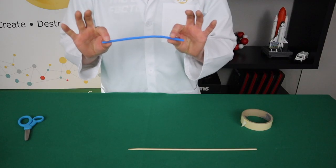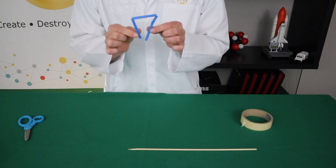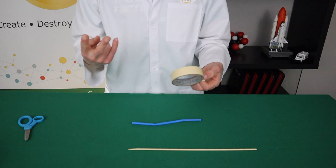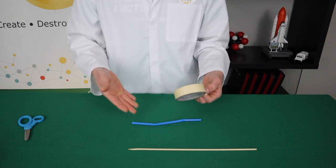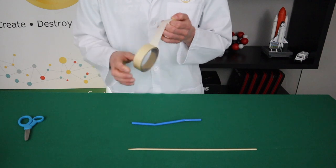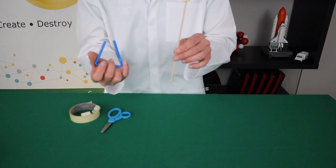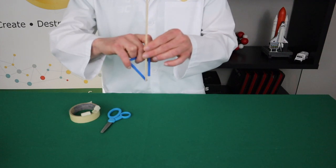Once you've made those cuts, you should be able to bend the straw into a triangle just like so. Now this is a very fast build. Step number two, which is the final step, is just to tape the straw to our skewer. We want to tape the straw so that the tips of the straw are at the bottom of our skewer like this.